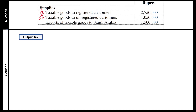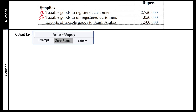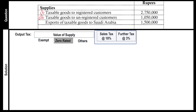Our planning part is done. Now we come to the execution part. The first calculation to finalize is output tax — this is sales tax on sales. Your supply could be in any of the following categories: exempt supply, zero-rated supply, or some other supply. Sales tax will be calculated at 18%, and further tax will be calculated at 3%.